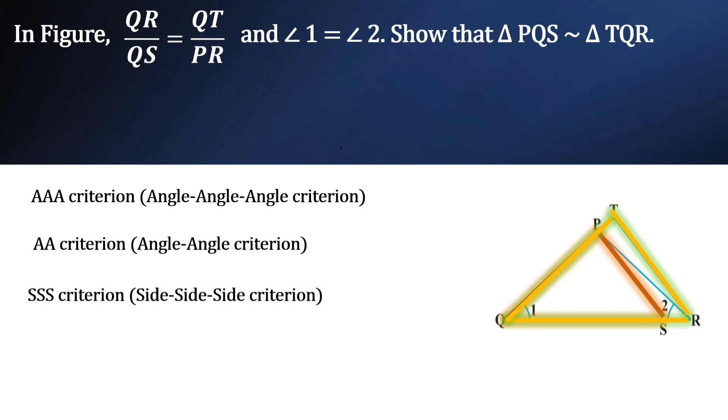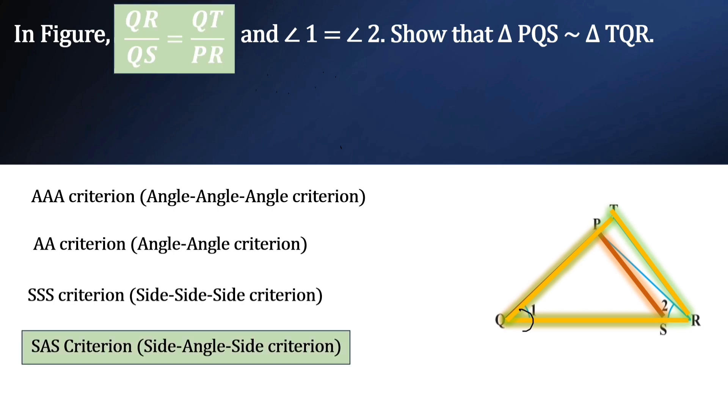If we were given the ratios of the three sides of the triangle, we could have used SSS criterion. Now we can use SAS criterion since we are given one common angle for the two triangles and also the ratios of the sides. So now we can use SAS criterion. Let us see how.